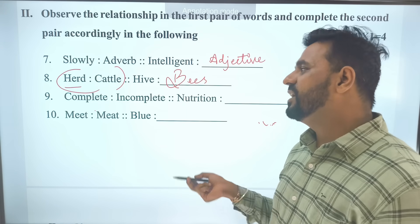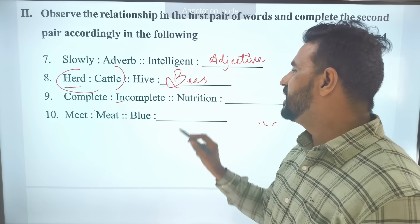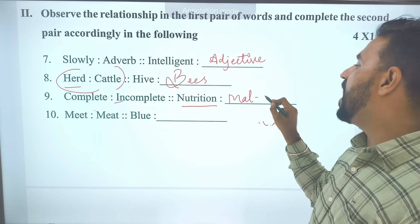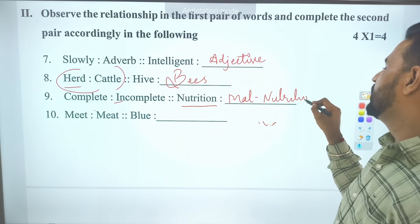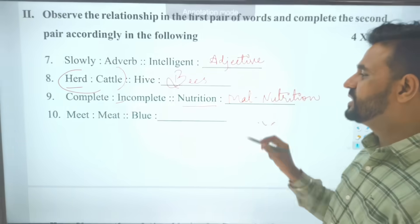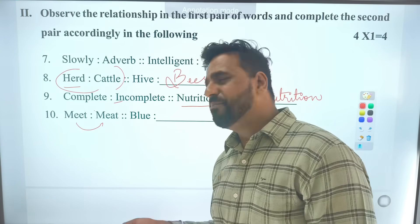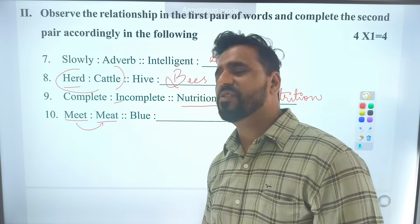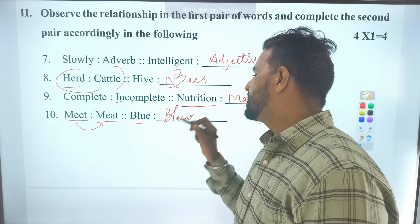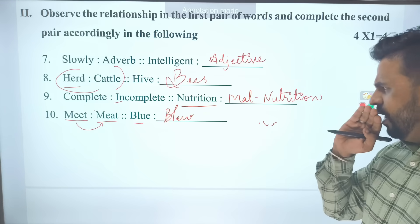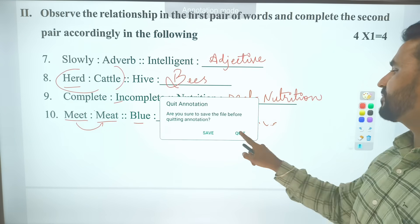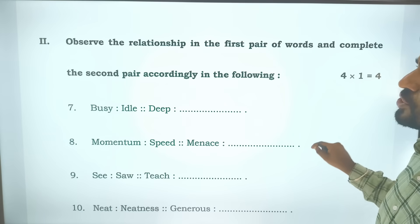Complete - the prefix is incomplete. Nutrition will become malnutrition. See the word, nutrition, malnutrition. The prefix of nutrition. Again, one homophone. Meat will become meet. This is to meet and this is the non-veg. Blue and this is blew. Participle of blow is blew. I will move on to the next question.